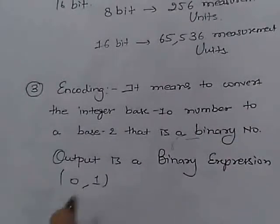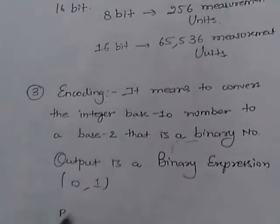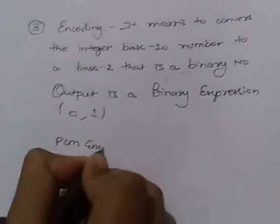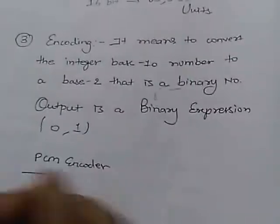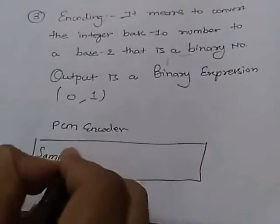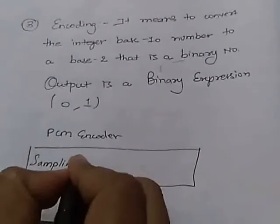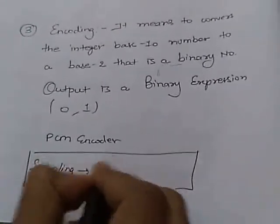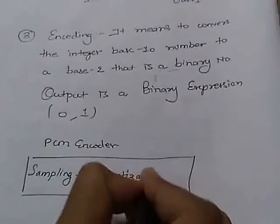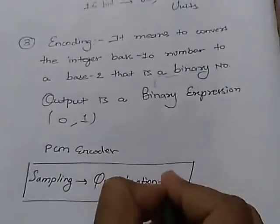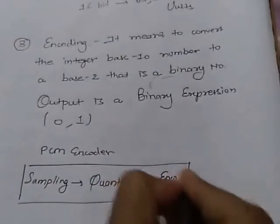For this encoding we have a PCM encoder, pulse code modulation. In this we have the first step is sampling, that is the process of digitization, and the second step is quantization, and the third step is encoding.